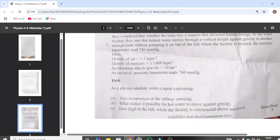What are we tasked? As a physics student, write a report explaining the following: Part A - two occurrences at the railway crossing. Part B - what makes it possible for hot water to move against gravity. Part C - how high is the hill where the factory is constructed above sea level.